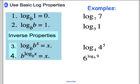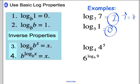Objective 4 covers some basic properties. First, log base anything of 1 always equals 0. Second, log base b of b — when the base is the same as what you're taking the log of — always equals 1. For example, log base 7 of 7 equals 1 because 7 to what power equals 7? It's 7 to the 1. And log base 5 of 1 equals 0 because 5 to the 0 equals 1.